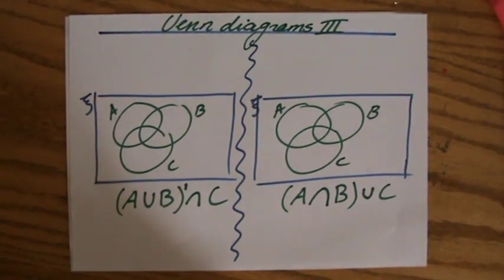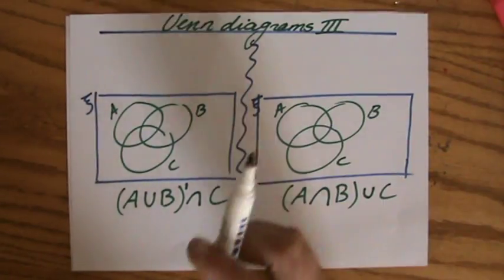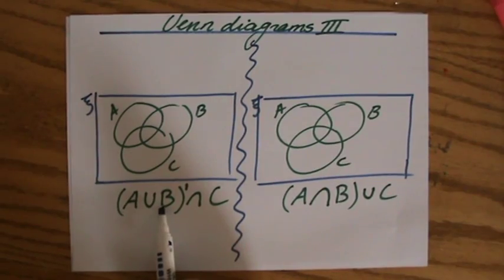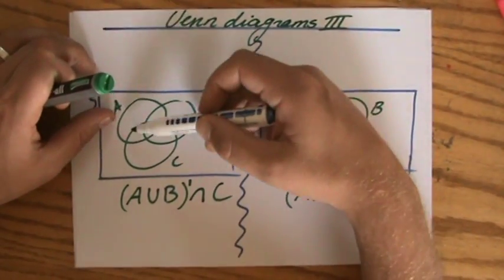Let's have a look at the first one. Of course, we always look at the brackets first. And what does it say? It says A union B, which means in A or in B, both of it, doesn't matter.